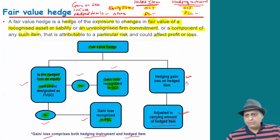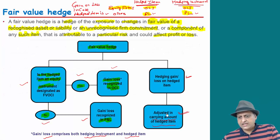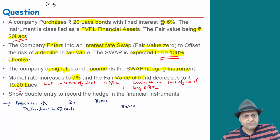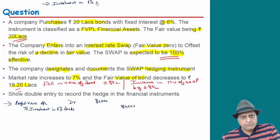What does the hedging gain or loss on the hedge item adjusted in carrying amount of hedge item mean? At the time of purchase, the entry is: investment in 6% bond account debited to bank. The investment was made in 6% bonds for 20,000,000 rupees.